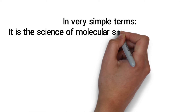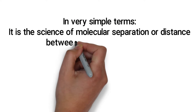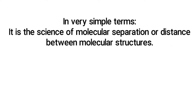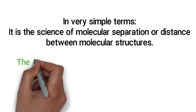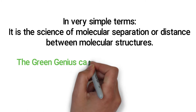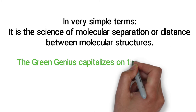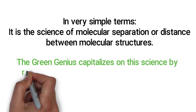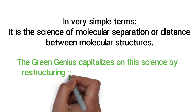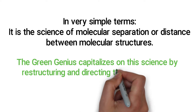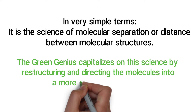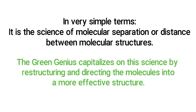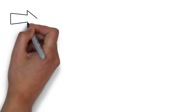In very simple terms, this is the science of molecular separation, or distance between molecular structures. The Green Genius capitalizes on this science by restructuring and directing the molecules into a more effective structure.